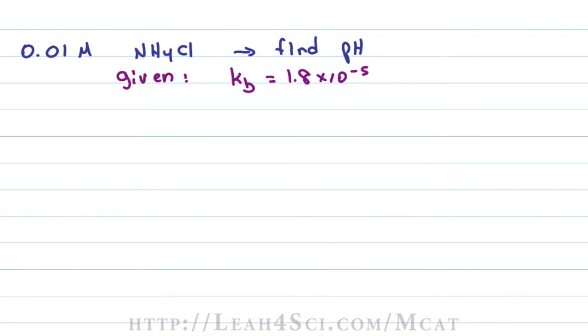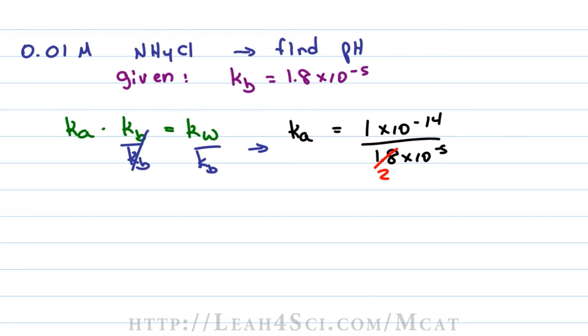Going back to our example, the first thing we want to do is find the Ka. So we have Ka times Kb equals Kw, divide both sides by Kb which gives me Ka equals 1 times 10 to the minus 14 divided by 1.8 times 10 to the minus 5. We round the 1.8 to a 2 so that 1 divided by 2 is equal to 0.5. Negative 14 divided by negative 5 is simply negative 14 minus negative 5 or negative 14 plus 5 which is equal to negative 9. And if we put this into proper scientific notation, we get 5 times 10 to the minus 10.